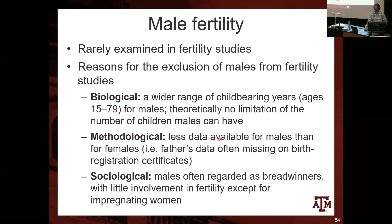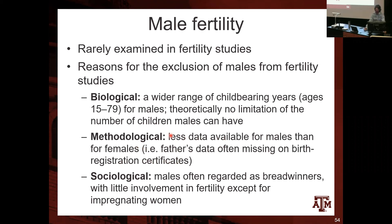Methodologically, there is less data available for males than females. Father's data is often missing on birth registration certificates. In some cases, birth certificates don't have the father's information. Even if you have a survey like the American Community Survey asking how many children men have, in some societies men might not even know how many children they have because they may have multiple partners. For women the information is much more reliable, so in terms of methodological standards, fertility data for women is more reliable. That's why this data is often not collected for men in most surveys.